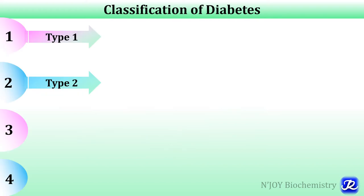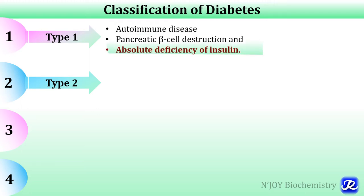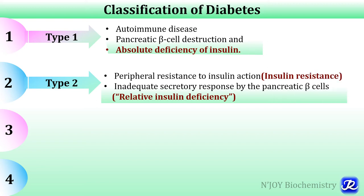Now let's see the classification of diabetes. The vast majority of cases fall into one of two broad classes: type 1 diabetes and type 2 diabetes, and 80 to 90 percent of cases are type 2 diabetes. Type 1 diabetes is characterized by pancreatic beta cell destruction and absolute deficiency of insulin, and this is an autoimmune disease. Type 2 diabetes is caused by a combination of peripheral resistance to insulin action — that is insulin resistance — and inadequate secretory response by the pancreatic beta cells, that is relative insulin deficiency.